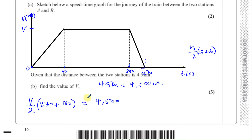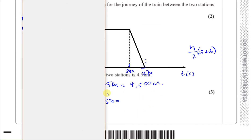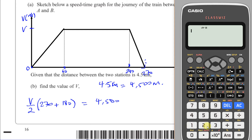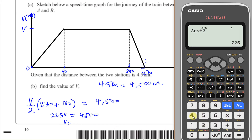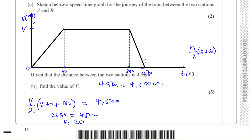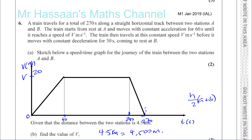This area equals 4,500 meters (since 4.5 km = 4,500 m). Adding 270 plus 180 gives 450; 450 divided by 2 is 225. So 225 times V equals 4,500. Therefore V equals 4,500 divided by 225, which gives V equals 20 meters per second.